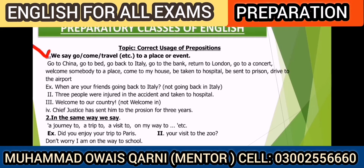Topic number one: which preposition we can use for a place or an event. If we say go, come, or travel for a place or an event — that is, we are going to a place or an event — then we use the preposition 'to'.